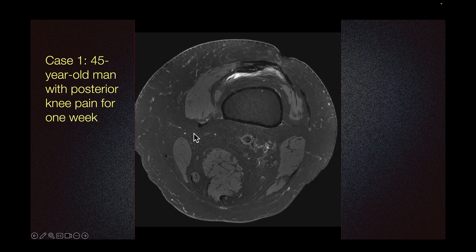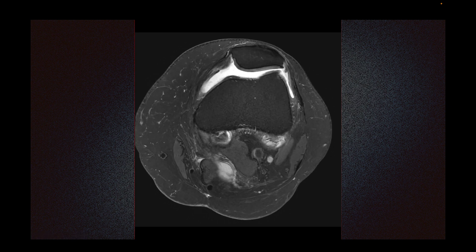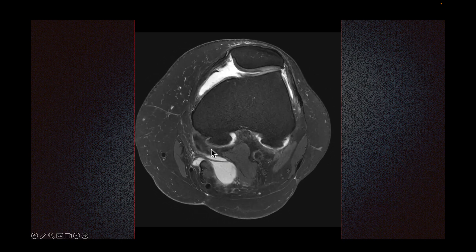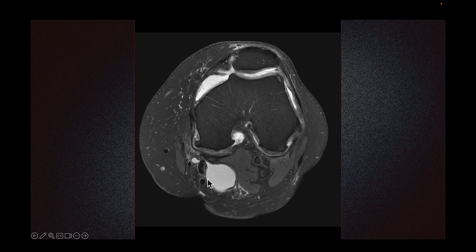Let's look at an abnormal case. We have a 45-year-old man with posterior knee pain for one week. This is semimembranosus, this is semitendinosus — again, cherry on top. The medial head of gastrocnemius would originate somewhere in this region as I scroll down. Here we see the medial head of gastrocnemius originating, and we have a cyst in between the semimembranosus and the medial head of gastrocnemius. So this is a Baker's cyst.